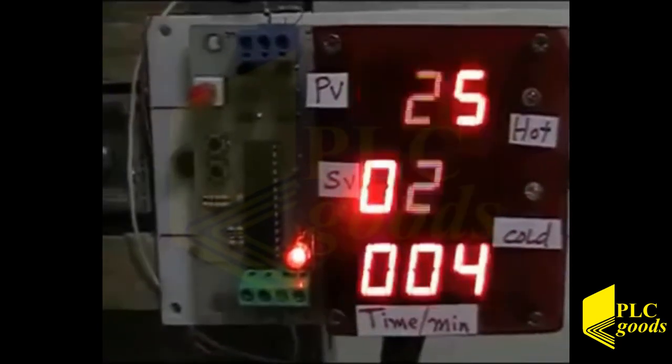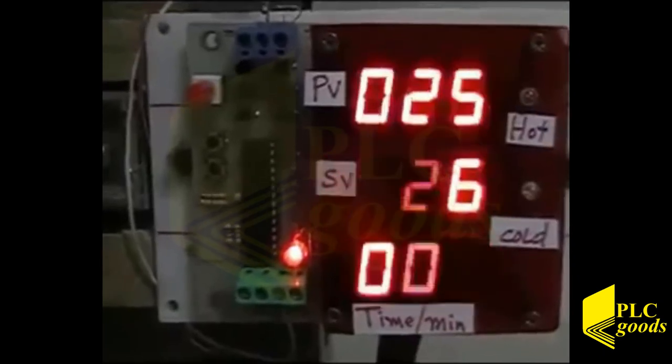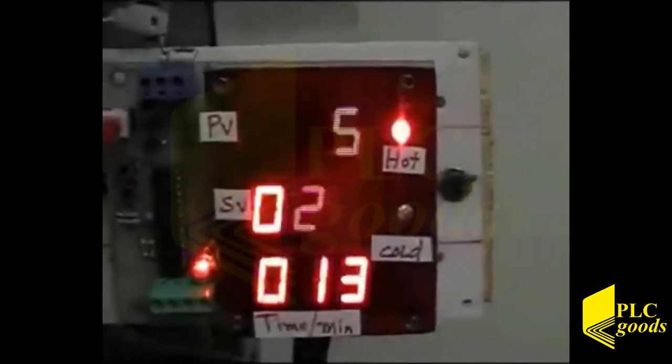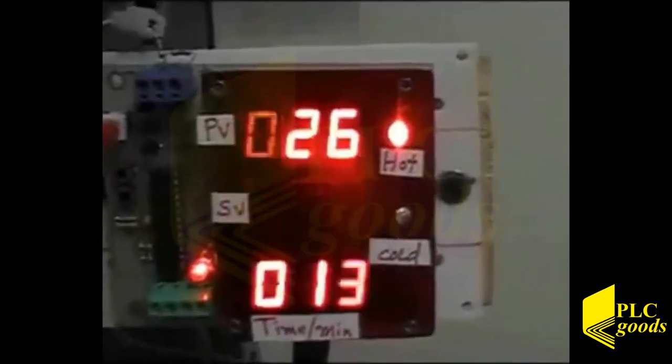Well, at time equal to 4 minutes, the difference between PV and SV is less than 3 degrees Celsius, so no need to take any action yet. Now PV value is 25 but SV value is 28.